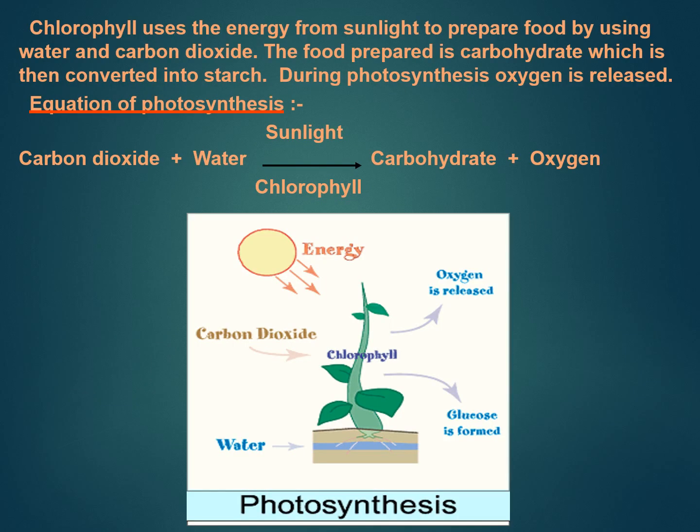This is the overall equation of the process of photosynthesis: carbon dioxide reacts with water in the presence of sunlight and chlorophyll to give carbohydrate and oxygen. This is all about the process of photosynthesis. Hope you all understood what photosynthesis is. Thank you.